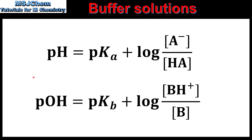Before looking at calculations, we'll look at two additional equations — the Henderson-Hasselbalch equations — that can be used to calculate the pH of a buffer solution. From the earlier expression for [H⁺], taking the negative log of both sides gives: pH = pKa + log([conjugate base] / [weak acid]). Similarly, pOH = pKb + log([conjugate acid] / [weak base]). These equations are not included in the chemistry data booklet, but they can be useful, though you can also use the Ka or Kb expressions directly.